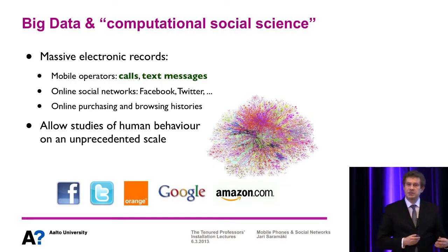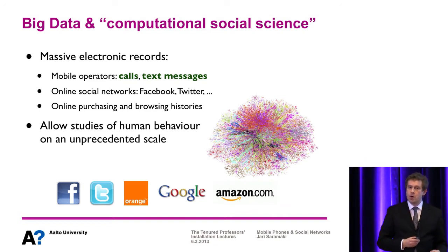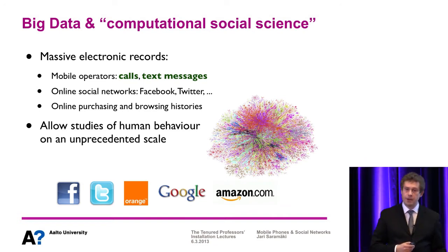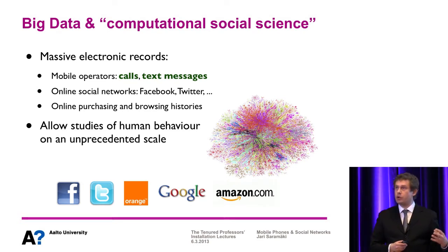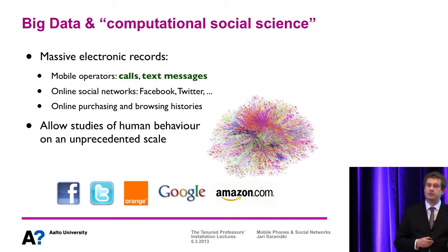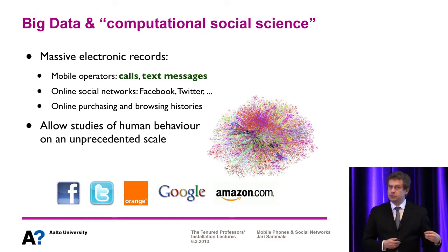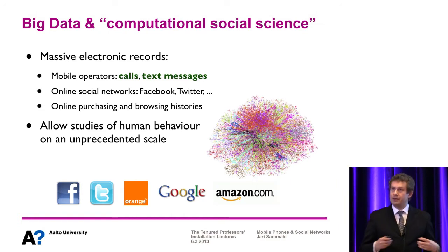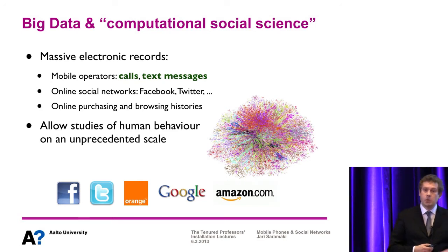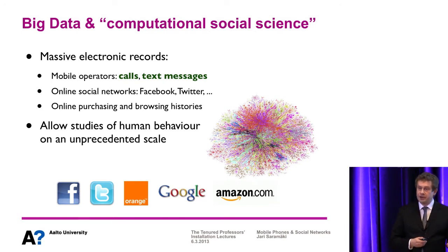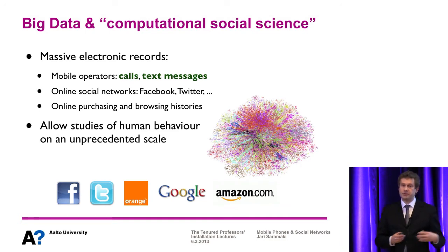This is where the touching points to the previous talk come. Nowadays the world is really full of data — everything we do online is recorded somewhere. Every time you call someone, the mobile operator records whom you called, when you did that, and for how long, for billing purposes. But such huge sets of data are of very big interest to us scientists, because we can quantitatively study human behavior on scales that were unheard of before. This has led to the emergence of so-called computational social science.